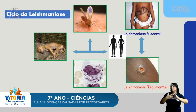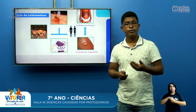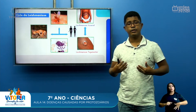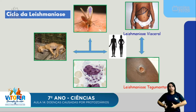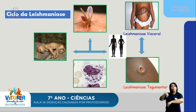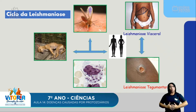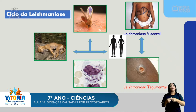A leishmaniose visceral pode levar à morte, pois ataca os órgãos internos como o fígado e o baço, fazendo-os aumentar enormemente — até quadruplicar de tamanho — e o abdômen fica bem grande. Meses depois da picada, os sintomas se intensificam: a pessoa apresenta fraqueza, dores no corpo, febre e principalmente esse abdômen aumentado com fígado e baço altamente aumentados. A pessoa vai se tratar por meses até ficar curada.